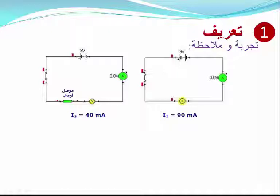في الدارة الأولى كانت شدة التيار 90 ميلي أمبار، وفي الدارة الثانية أصبحت 40 ميلي أمبار. ونلاحظ كذلك على إضاءة المصباح أنه في الدارة الأولى كانت إضاءة قوية، وفي الدارة الثانية أصبحت خافتة.